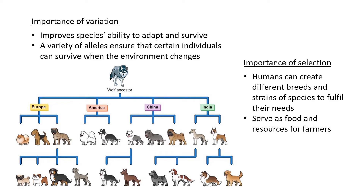Without different types of alleles, we could not have the survival of a specific species. It's very important to have variation, especially when the environment changes. If it suddenly gets hotter due to global warming, only the individuals with alleles enabling them to survive in a hot climate can survive, reproduce, and carry on those alleles. So variation is very important when the environment changes.